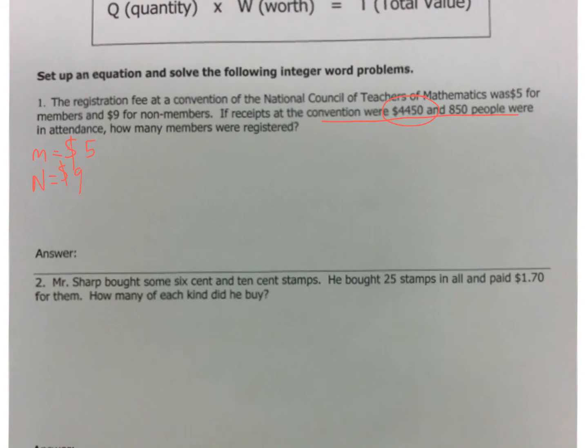Now, if the receipts at the Convention were $4,450 and 850 people in attendance, how many were registered? Well, again, we've got two key pieces of information right here. This $4,450 is what I call total money. $850 is what we call a total quantity. And yes, it's going to be sad to think of people as quantity, but they are.